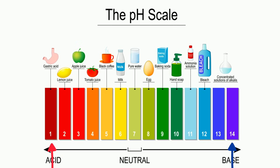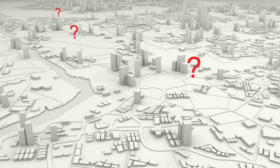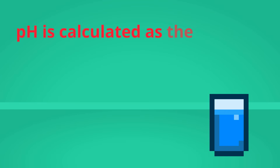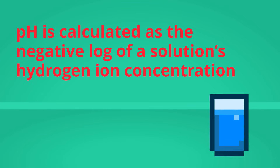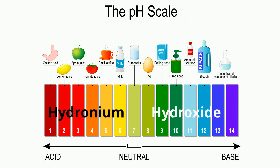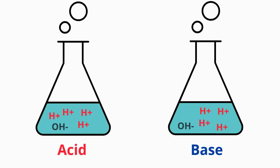So what creates an acid or a base? Technically, pH is calculated as the negative log of a solution's hydrogen ion concentration. But in very simple terms, acids gain hydrogen ions and create hydronium. And bases are created by losing hydrogen ions and creating hydroxide. In simple terms: acids gain hydrogen and bases lose hydrogen.